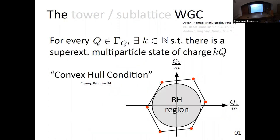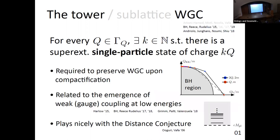That's the imprecise statement. A slightly more precise statement is that the weak gravity conjecture — the mild conjecture — says that for every direction in the charge lattice there has to be some multi-particle state. You can think of this as the convex hull condition: a picture of this condition where you have multi-particle states for every leg along this convex hull.